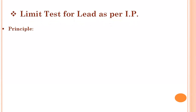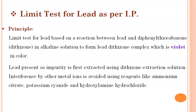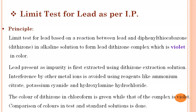The basic principle involved in the limit test for lead as per IP is based on a reaction between lead impurities and diphenyl thiocarbazone — that is, dithizone — in an alkaline solution, to form a lead dithizone complex which is violet in color. The lead present as impurity is first extracted using dithizone extraction solution. Interference by other metal ions is avoided using reagents like ammonium citrate, potassium cyanide, and hydroxylamine hydrochloride.